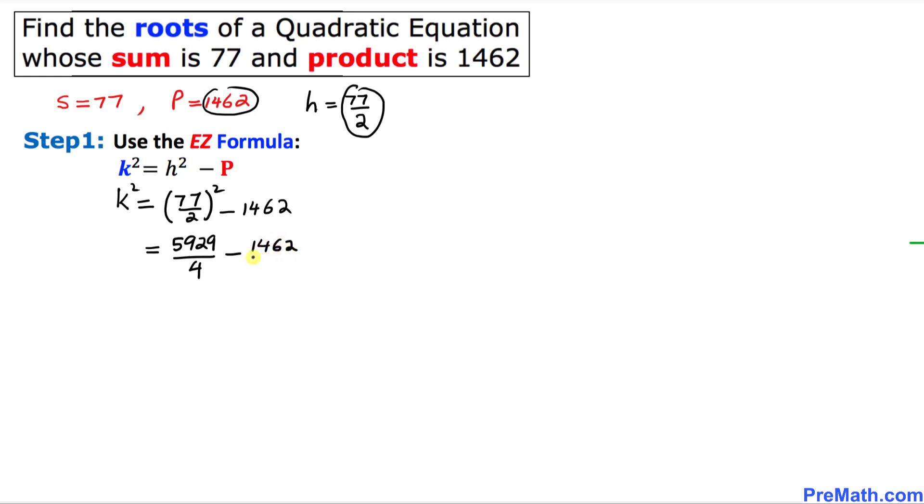Let's simplify furthermore. 77 divided by 2 square is going to be 5929 divided by 4 minus 1462. I'm going to make it a fraction, I'm going to just put a 1 underneath, and we are going to subtract these two fractions. Let me show you an easy way of doing this thing. Let's go ahead and crisscross that one.